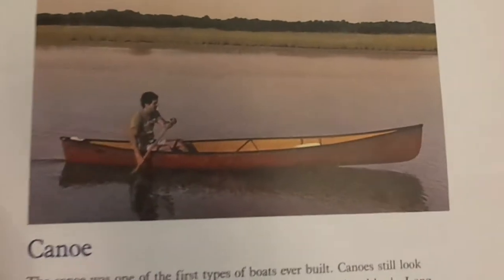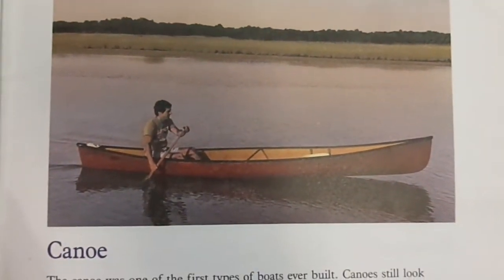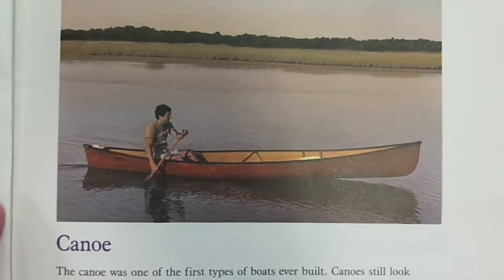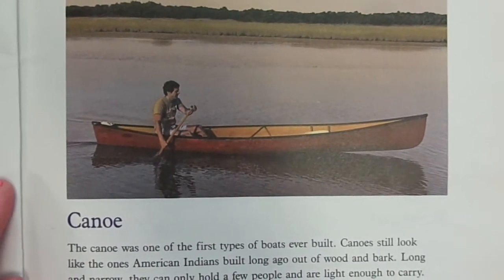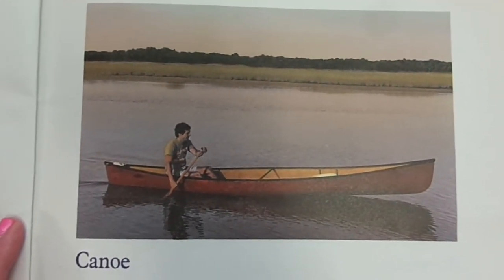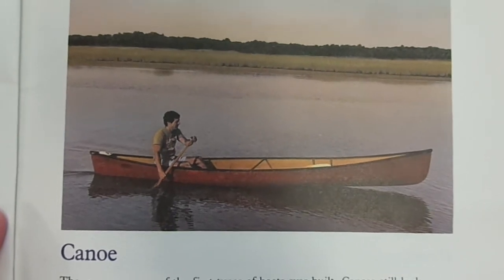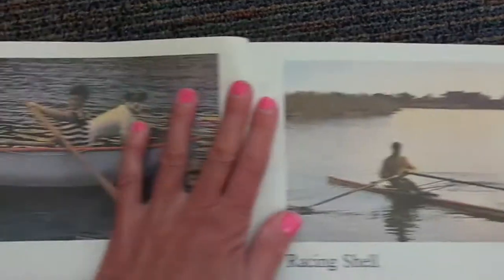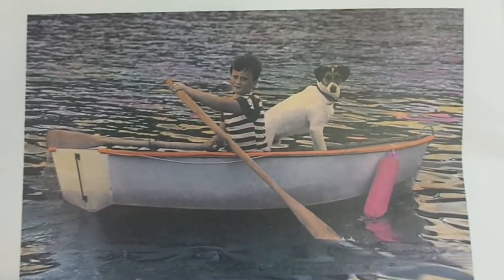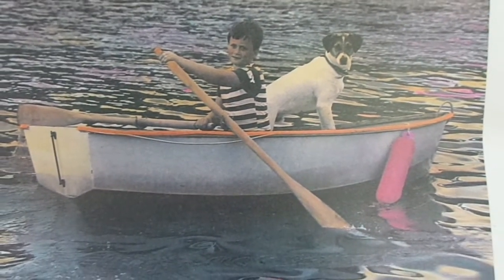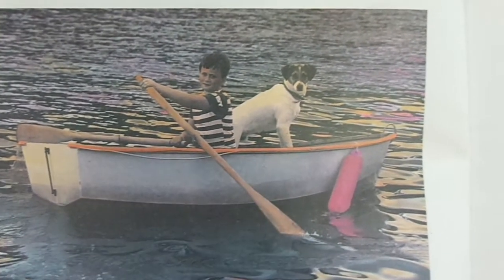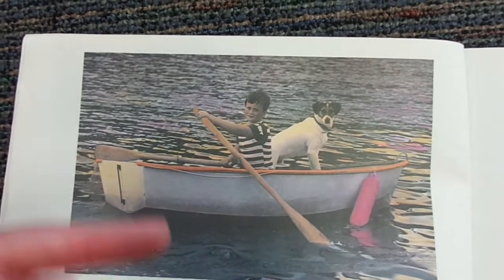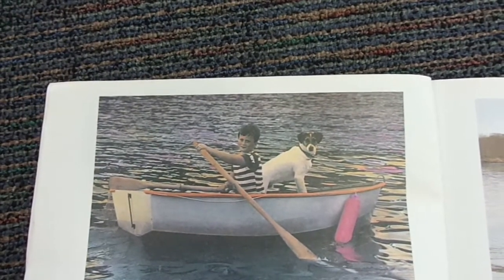Sometimes we see those on the beach. The canoe — the canoe was the first type of boat ever built. Canoes still look like the ones American Indians built long ago out of wood and bark. They're long and narrow, can hold a few people, and are light enough to carry. Have you guys ever been on a canoe? How about a rowboat — rowers sit facing backwards and pull on the oars to make the boat go forward.